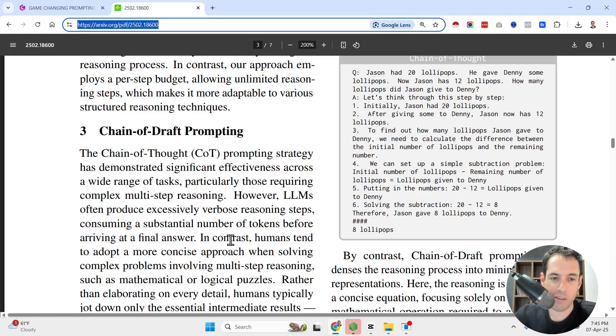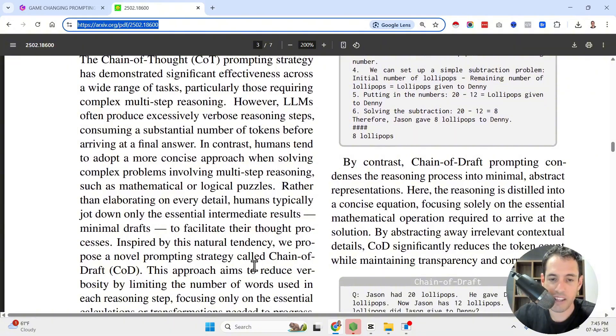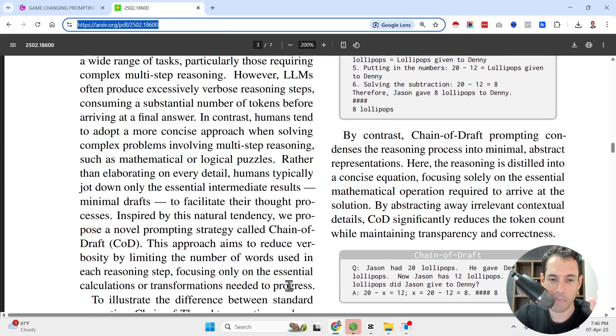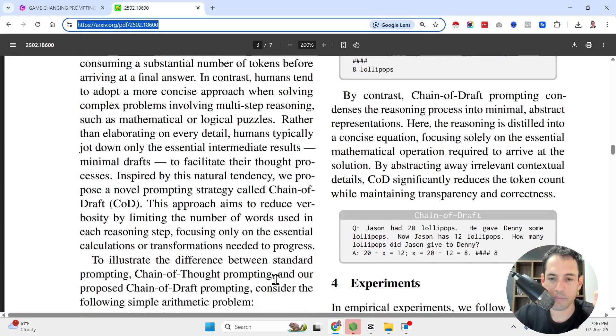In contrast, humans tend to adopt a more concise approach when solving complex problems involving multi-step reasoning, such as mathematical or logical puzzles. Rather than elaborating on every detail, like chain of thought, we typically jot down only the essential, like the outlines, the essential intermediate results, minimal drafts, to facilitate the thought process. So inspired by this natural tendency, what they did is they came up with the idea of chain of draft. The approach of chain of draft aims to reduce verbosity by limiting the number of words used in each reasoning step, focusing only on the essential calculations or transformations needed to progress.